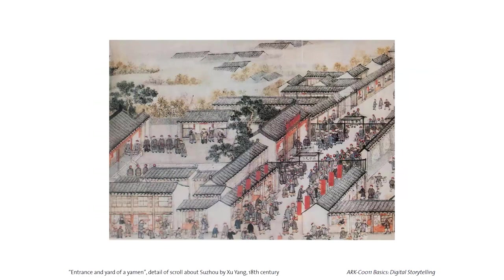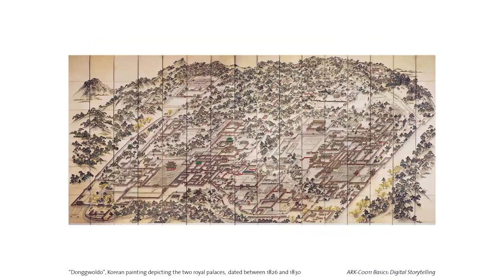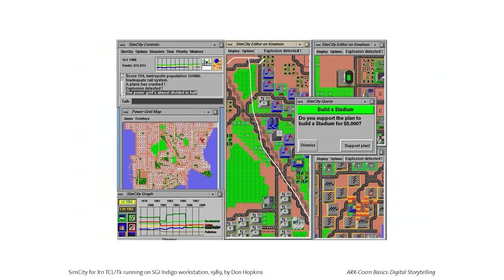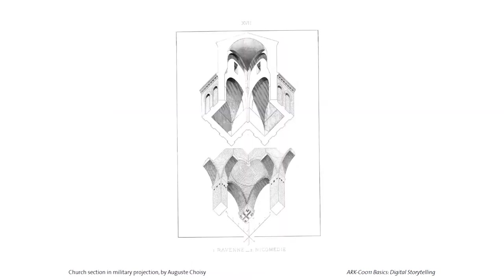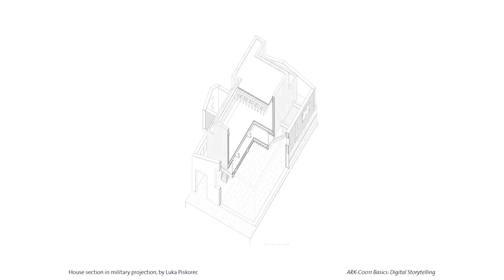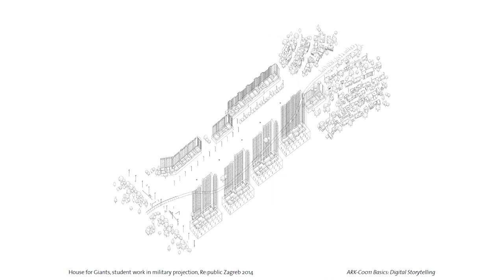If you've ever played computer or mobile games, you'll know these techniques have been used there too. It's actually SimCity — a city simulator, a pretty old one — using basically military projection, because it's very convenient. The floor plan is not distorted, all right angles, and you look from slightly above. Another example of military perspective is one of my own examples: the plan is not distorted, and everything is just built up from the plan upward.